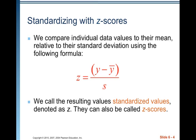We compare individual data values to their mean relative to their standard deviation using the z-score formula. Z equals y minus y-bar — or, if your text or calculator uses x as the observations and x-bar as the average, then it would be x minus x-bar. It doesn't matter: it's the individual observation minus the average, divided by the standard deviation. We call the resulting values standardized values, denoted as z, also called z-scores.